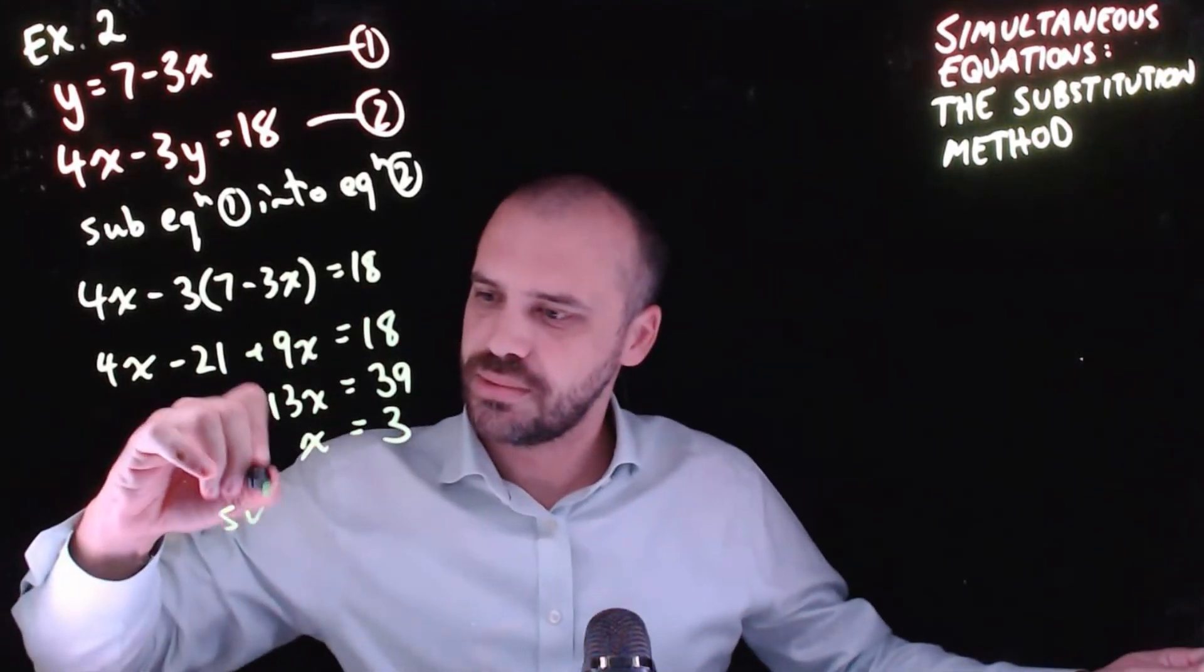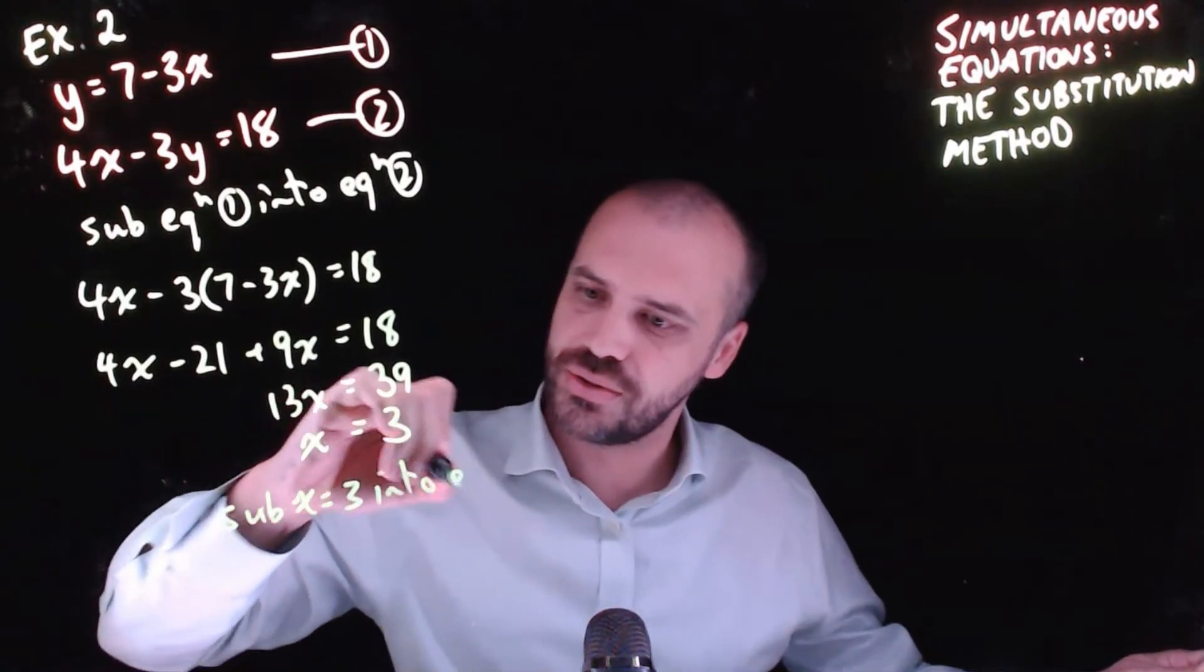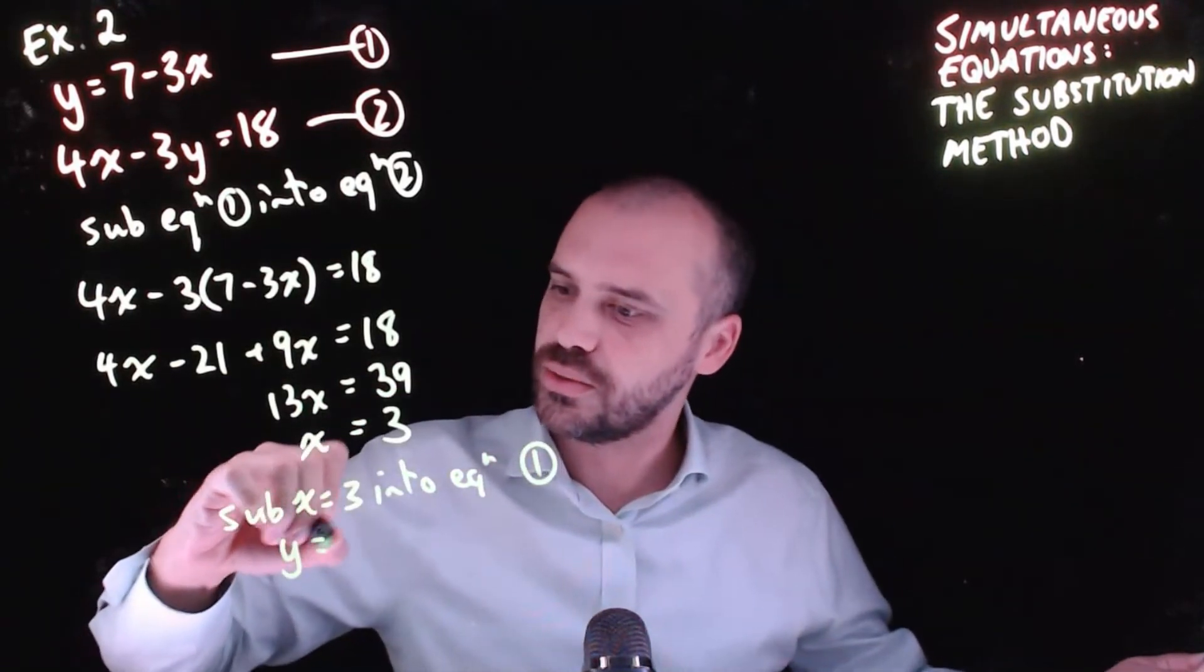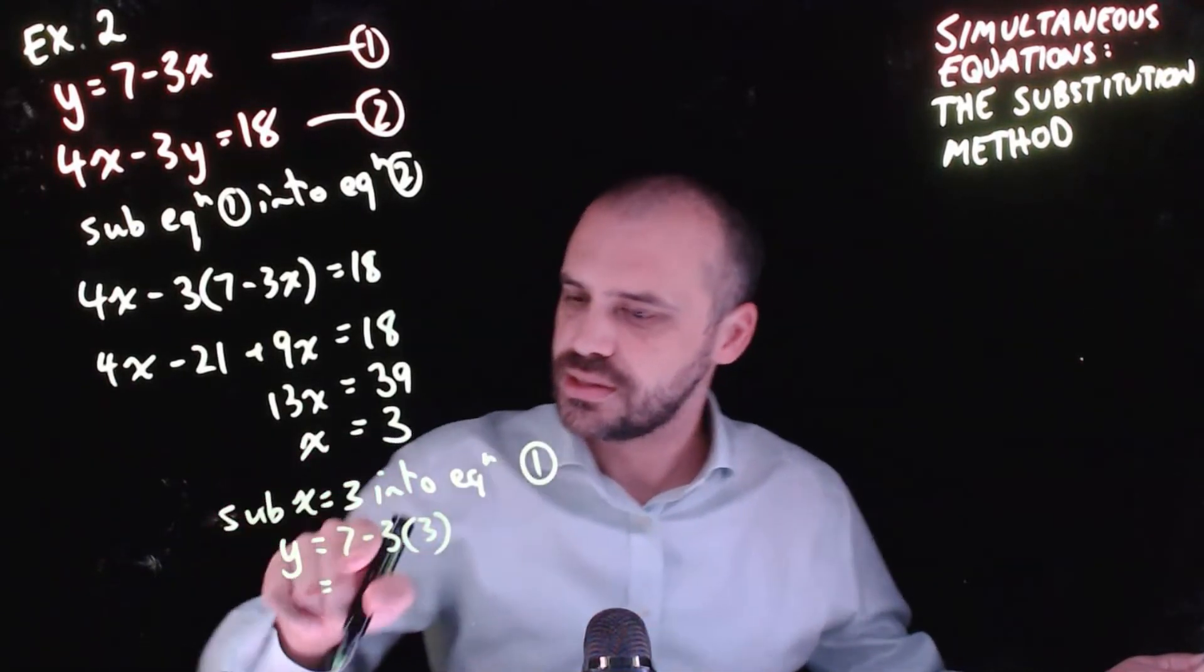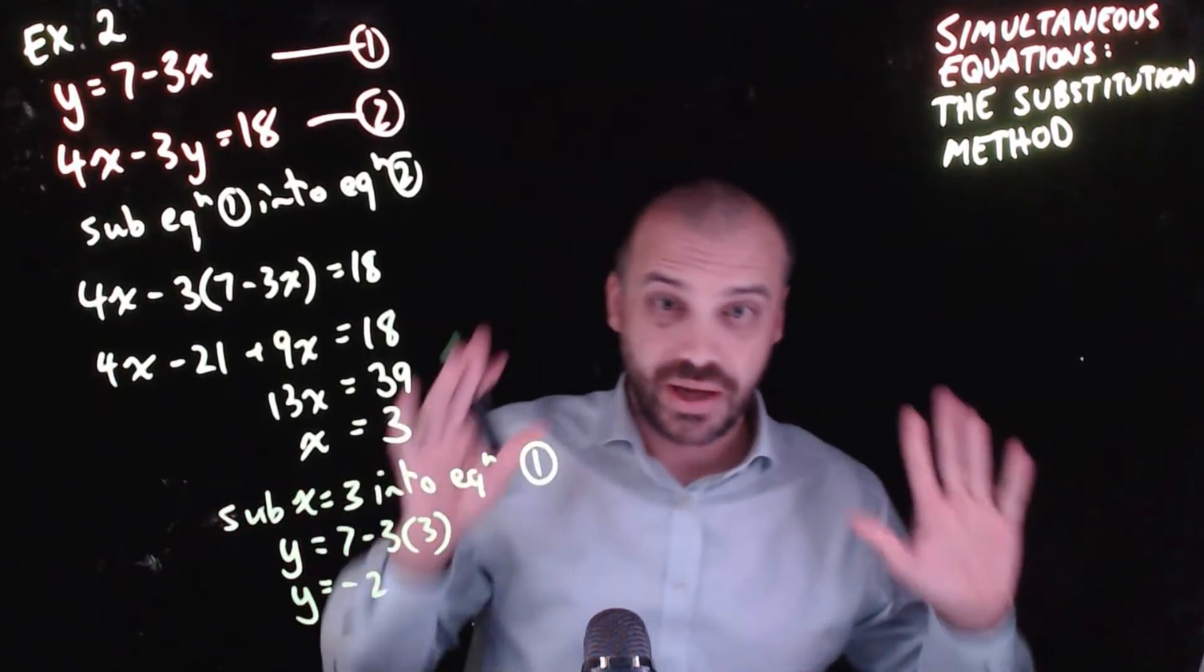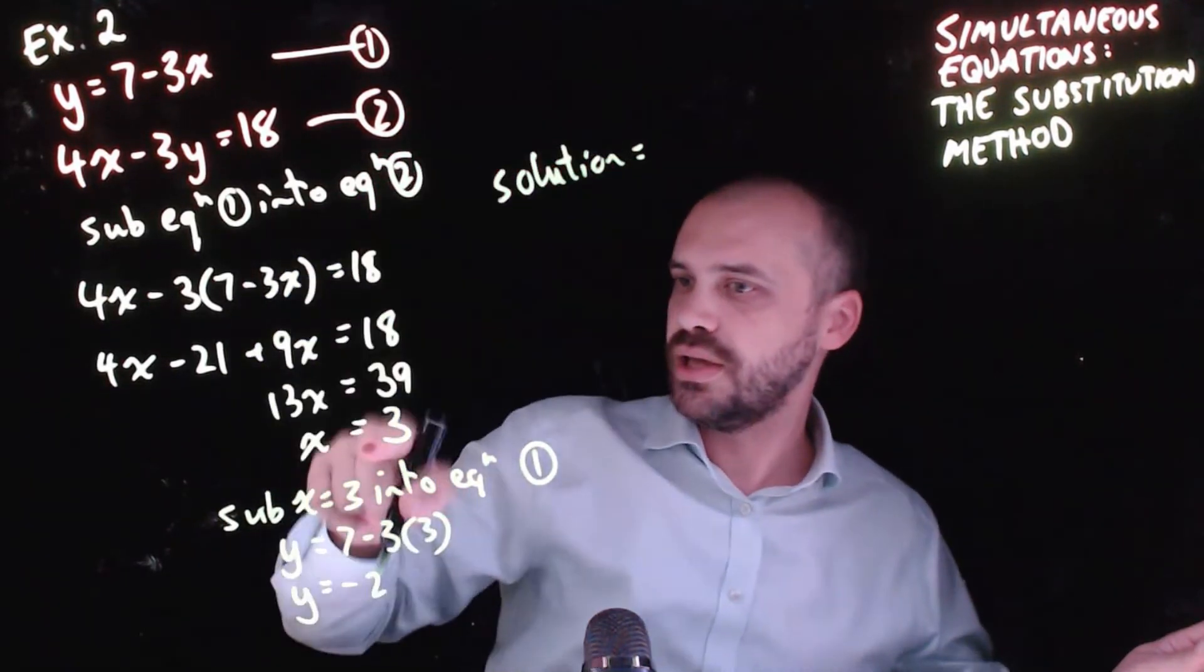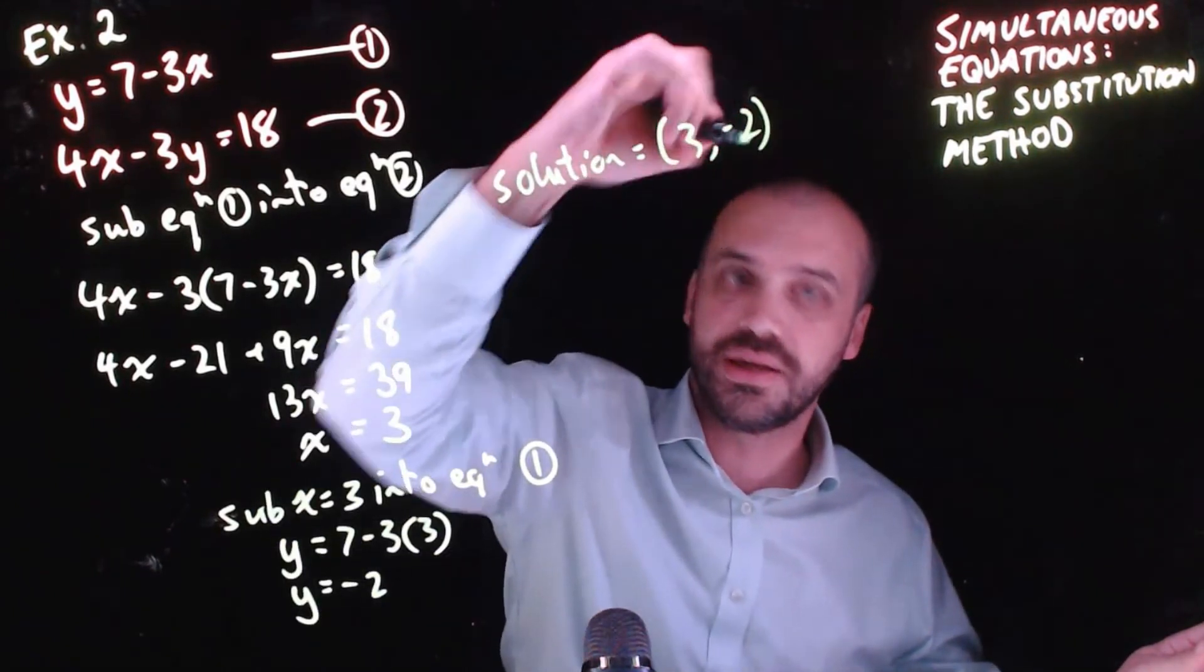And then we'll sub x = 3 into equation one. We get y = 7 - 3(3) = 7 - 9 = -2. So our final solution is x = 3 and y = -2.